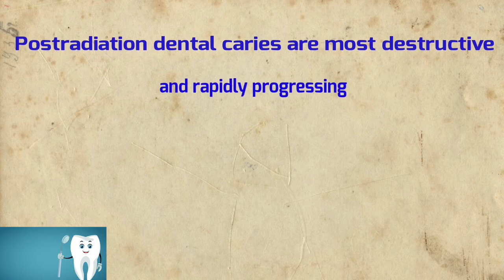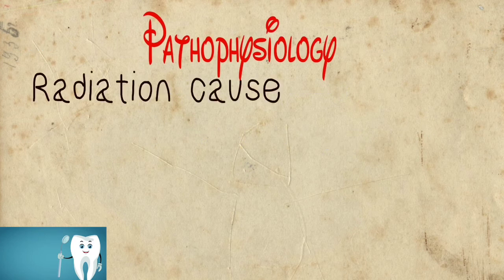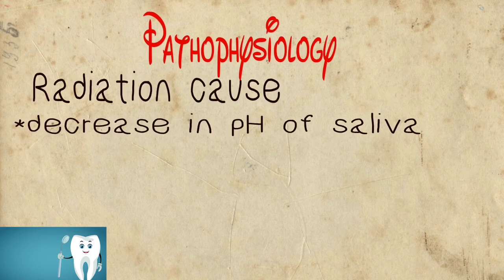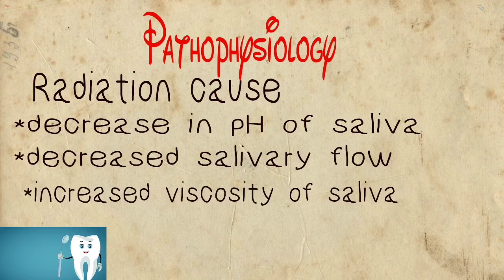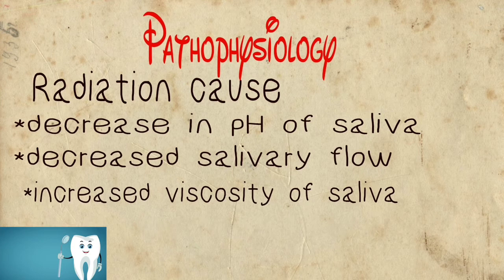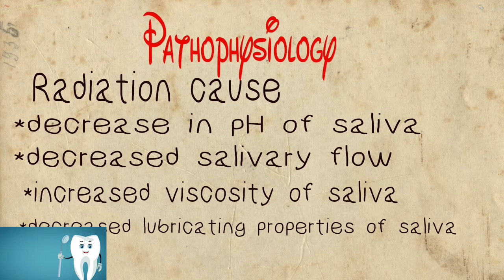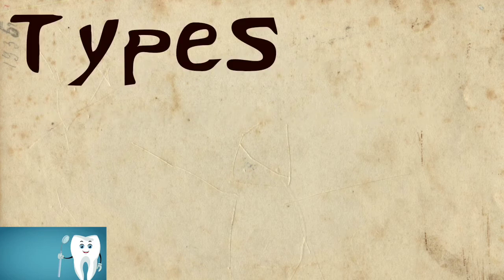Post-radiation dental caries are most destructive and rapidly progressing, occurring within the first three months of radiotherapy. Pathophysiology: radiation causes a decrease in pH of saliva, decreased salivary flow, increased viscosity of saliva, and decreased lubricating properties of saliva. When saliva is altered, this caries is formed. All these changes lead to calcification of the enamel and increased accumulation of food debris.